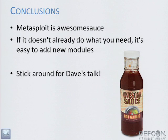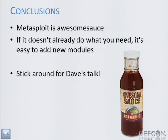Metasploit is awesome sauce. If it doesn't already do something you need, it's relatively easy to add your own stuff. The module structure is simple, and the amount of Ruby necessary to write new modules is minuscule — if you've written any other scripting language, you can learn the Ruby necessary to write a module in an afternoon. If you're interested in more post-exploitation awesome sauce, stick around for Dave Maloney's talk coming up next.